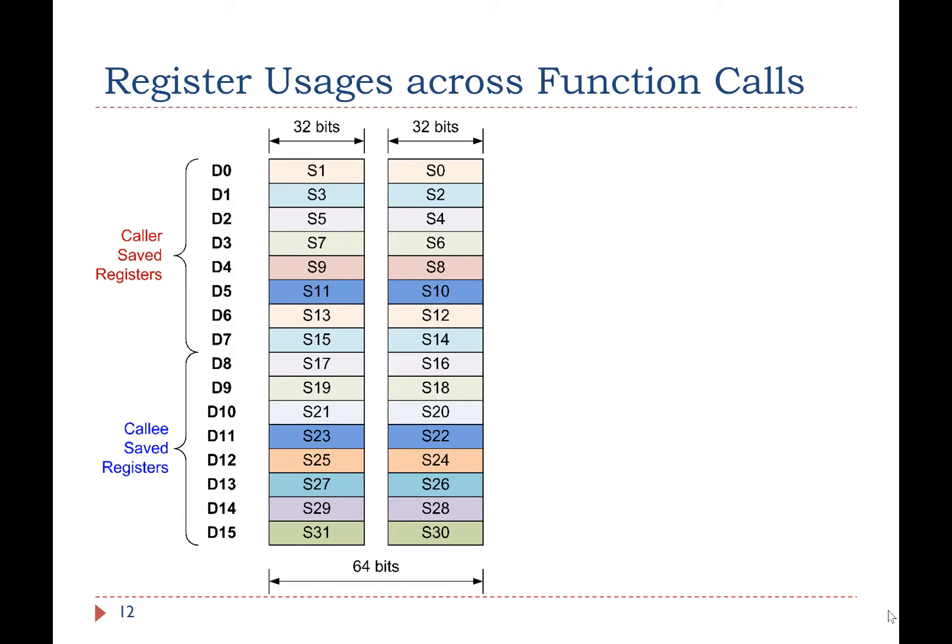All assembly functions are required to follow the procedure call standard. Registers S0 to S15 or D0 to D7 are caller-saved registers. If the caller wishes the values of these registers remain the same after the callee returns, the caller should preserve them by using the stack. Registers S16 to S31 or D8 to D15 are callee-saved registers. The callee should recover their original values if the callee writes to them.